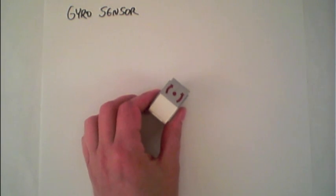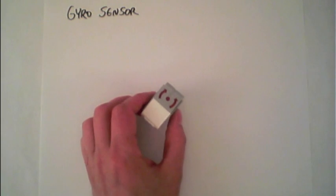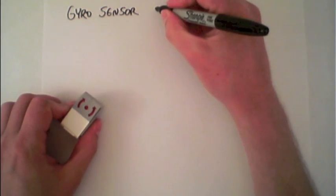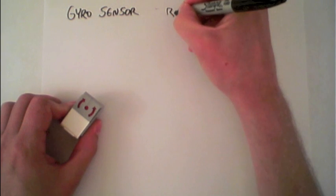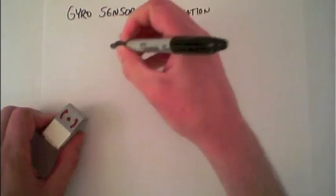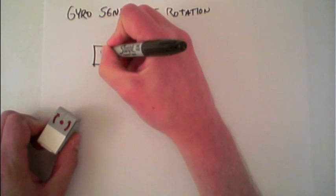The gyro sensor is a new sensor for LEGO Mindstorms being introduced here for the EV3 kit. It's used for measuring rotation, and I'll sketch out a gyro sensor here.